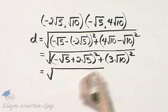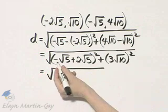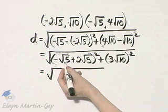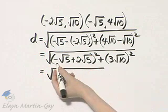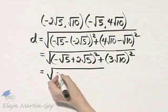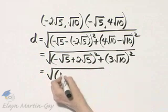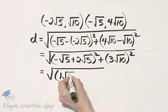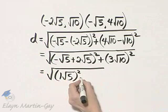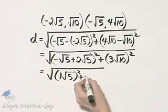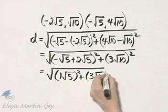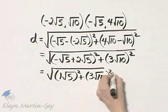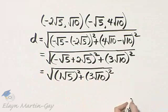Continuing to simplify: negative square root of 5 plus 2 square root of 5 — think of that as negative 1 plus 2 — gives 1 square root of 5, squared. Plus 3 square root of 10, squared.